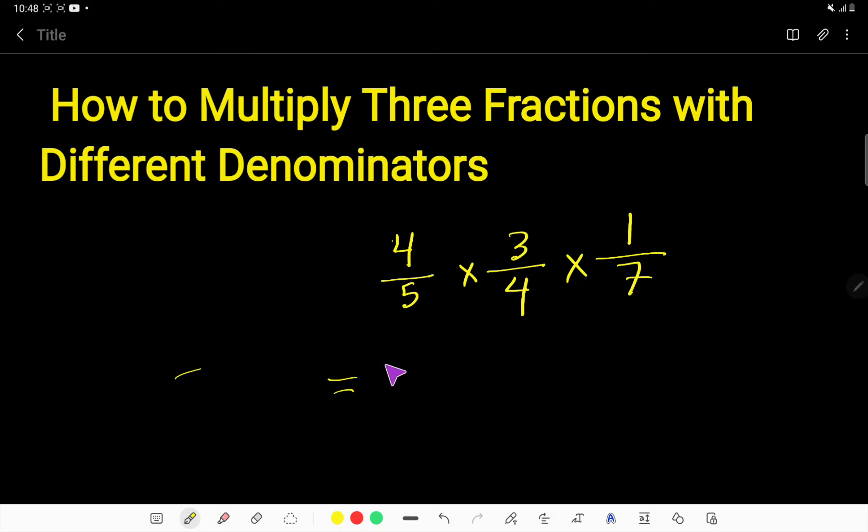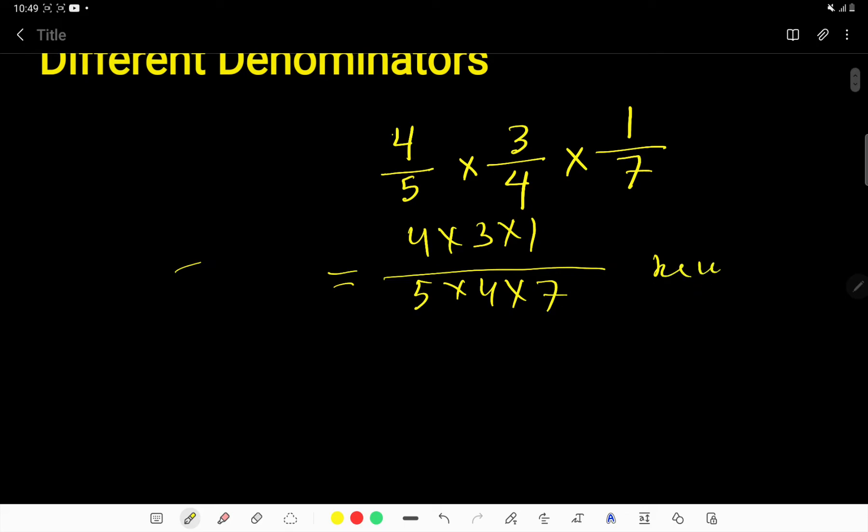When you're multiplying fractions, you don't need to think about the denominators. You have to follow just three steps. First step: multiply all the top numbers. Second step: multiply all the bottom numbers. You're getting a new fraction.